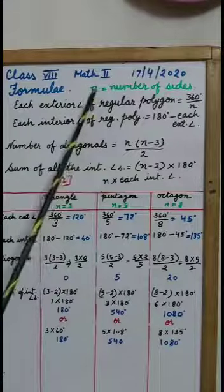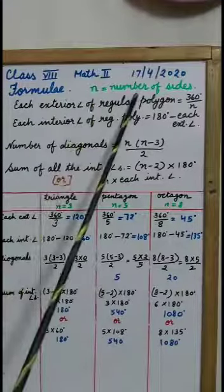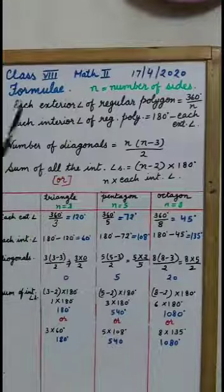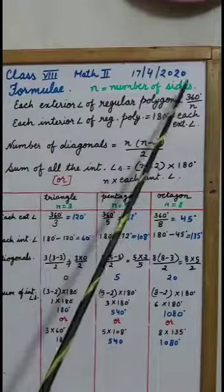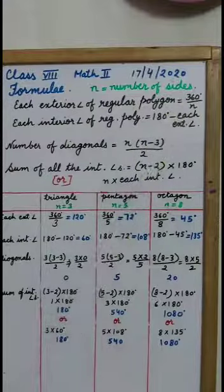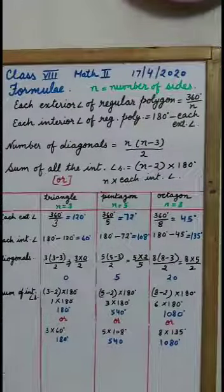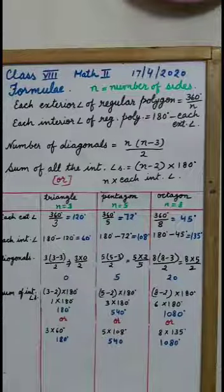Before that, I would like to tell you number of sides is denoted by n. Each exterior angle of a regular polygon is 360 degrees upon n. As we know, sum of all the exterior angles of a polygon is 360 degrees.